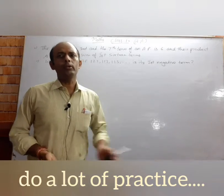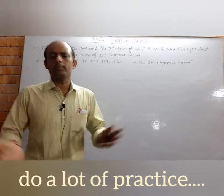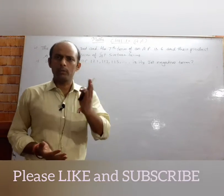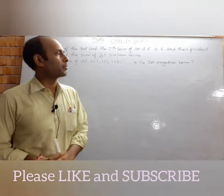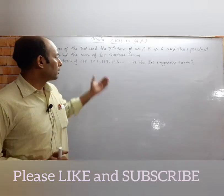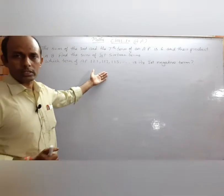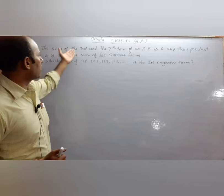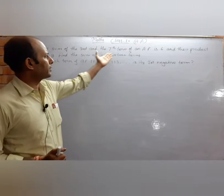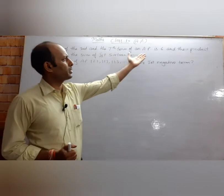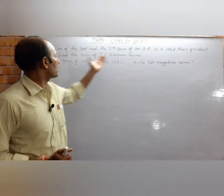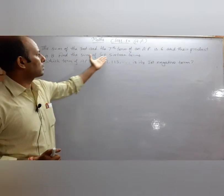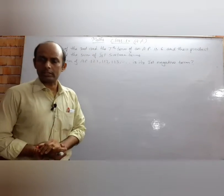In the previous video I have taught a lot of things for practice. Now today there are two questions: the sum of the third and seventh term of an AP is 6 and the product is 8. Find the sum of the first 16 terms.